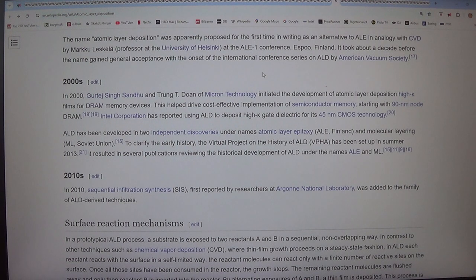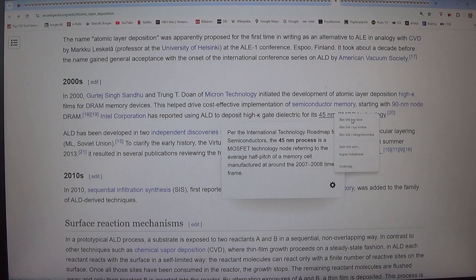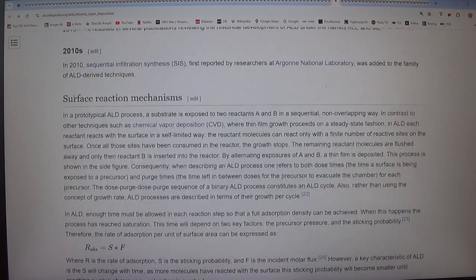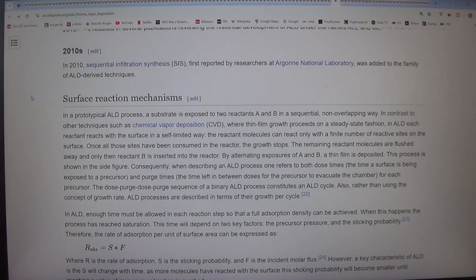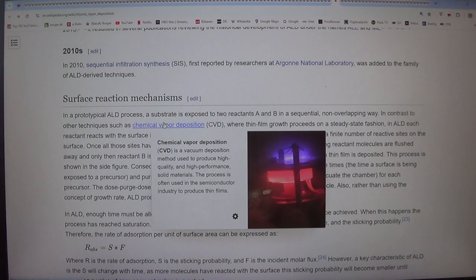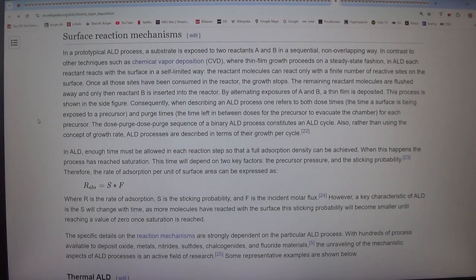2010s. In 2010, Sequential Infiltration Synthesis (SIS), first reported by researchers at Argonne National Laboratory, was added to the family of ALD-derived techniques. Surface Reaction Mechanisms. In a prototypical ALD process, a substrate is exposed to two reactants A and B in a sequential, non-overlapping way. In contrast to other techniques such as chemical vapor deposition (CVD), where thin-film growth proceeds in a steady-state fashion, in ALD each reactant reacts with the surface in a self-limited way. The reactant molecules can react only with a finite number of reactive sites on the surface. Once all those sites have been consumed in the reactor, the growth stops. The remaining reactant molecules are flushed away and only then reactant B is inserted into the reactor. By alternating exposures of A and B, a thin film is deposited.